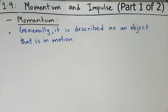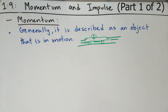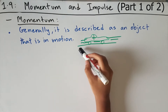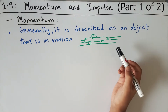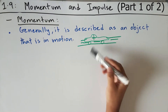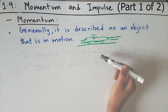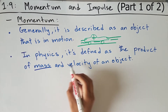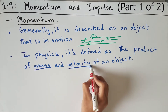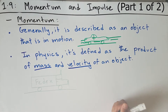Generally, momentum is described as an object that is in motion. So say if you had a car that was driving on a road in some direction and it had some speed, then this car would have some momentum. However, in physics, it's defined as the product of mass and the velocity of an object.